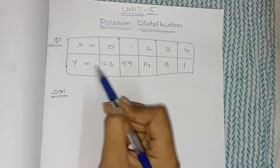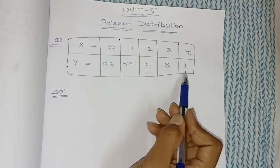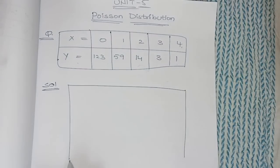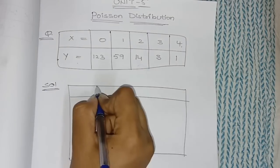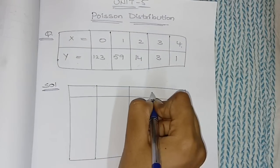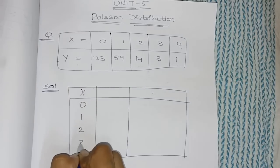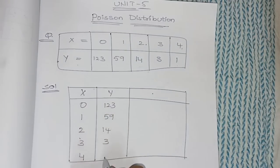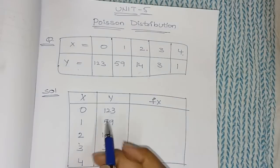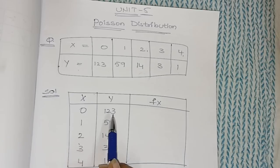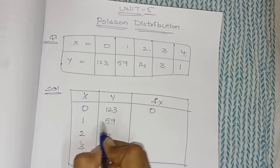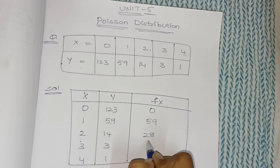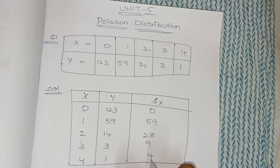The first step is to do the table part. The columns you will have are: x column, y column, and fx column. x is 0, 1, 2, 3, 4 and y column is 123, 59, 14, 3, 1. Next you need to compute fx, which is x multiplied by y. So 123 into 0 is 0, 59 into 1 is 59, 14 into 2 is 28, 3 into 3 is 9, 1 into 4 is 4.